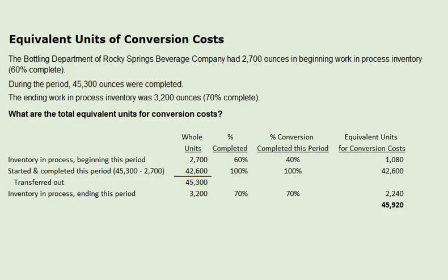The third group of inventory is the amount that remains at the end of the period — inventory in process that is not yet completed. That is 3,200 ounces, given in the problem, and it is 70% complete as to conversion costs. Hence, the equivalent units for the inventory in process at the end of the period are 2,240, calculated by taking 3,200 ounces times 70%.